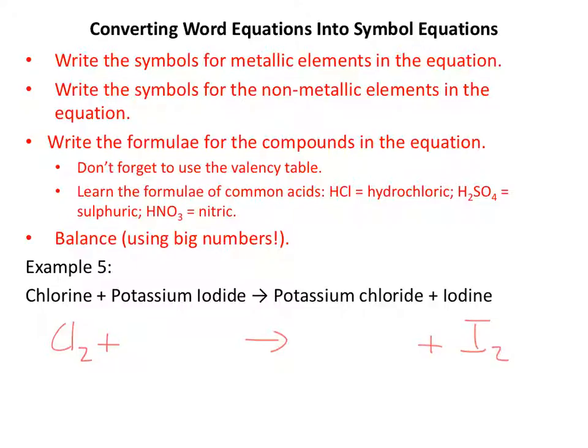And now we have to write our formulae for the compounds. We've got potassium iodide, potassium chloride. So potassium iodide, let's get the valency tables out again. Potassium is 1, iodide is 1, and they're both the same. So that means we can just write KI. Potassium chloride, potassium is 1, same as before. Chloride is also 1, so KCl.